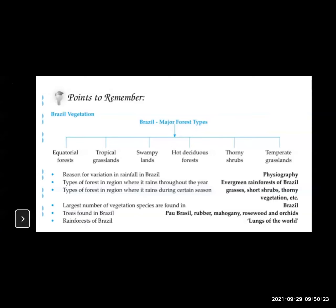Some important points to remember about Brazil vegetation. In Brazil, there are major types of forests: equatorial forests, tropical grasslands, swampy lands, hot deciduous forests, thorny shrubs, and temperate grasslands. These are the major types of forests found in Brazil.